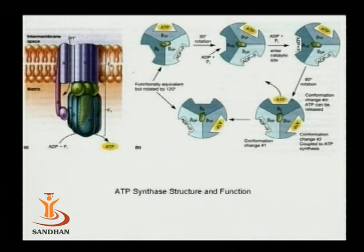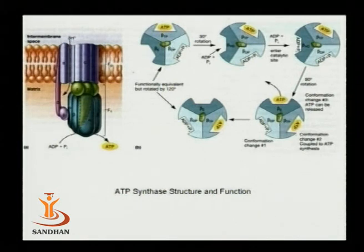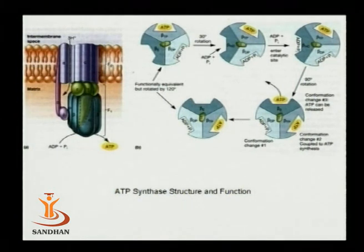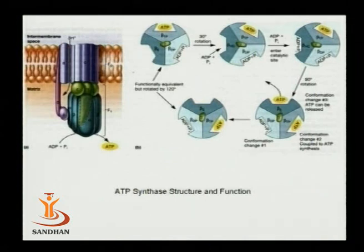F1 has both alpha and beta subunits. The beta subunit has three active sites. Slowly, there is conformational change in the beta subunit. First, a 30-degree rotation results in conformational change so that ADP and Pi enter the active site. Then a 90-degree conformational change takes place, causing three important conformational changes: in one, ADP and Pi bind to form ATP; in the second, ATP binds to the active site; and in the third, ATP is released from the beta subunit.